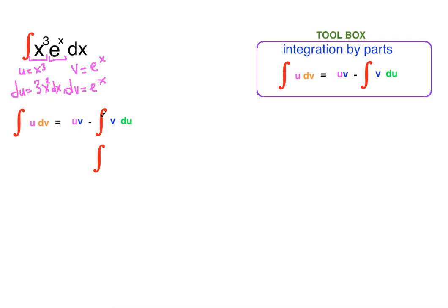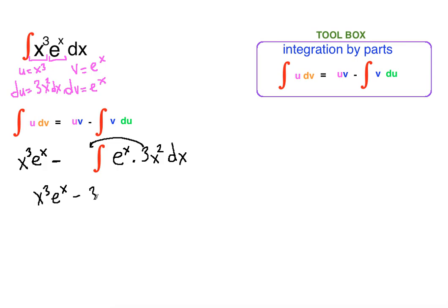Let's apply the formula: u times v minus the integral of v times du. So u times v is x to the third times e to the x, minus the integral of v du. v is e to the x and du is 3x squared dx. We can pull the 3 to the front, giving us 3 times the integral of x squared e to the x dx.